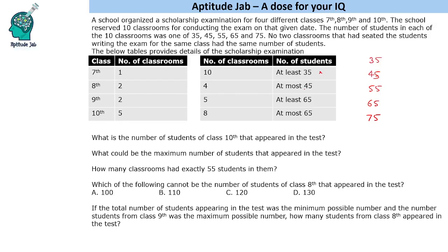4 classrooms have at most 45 students, meaning either 35 or 45 students. So there are 4 classrooms in these two categories, which means the remaining 6 classrooms have 55, 65, or 75 students. There are 5 classrooms that have at least 65 students — meaning those two categories (65 and 75) account for 5 classrooms — so 55 will have exactly 1 classroom.